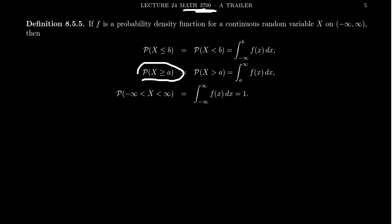Similarly, if you want to find the probability that x is greater than or equal to a, this is going to be an improper integral from a to infinity of f dx. If you take the probability that x is greater than negative infinity and less than infinity, notice you're integrating the entire domain of the density function. Of course, that's going to be one because it's a density function.